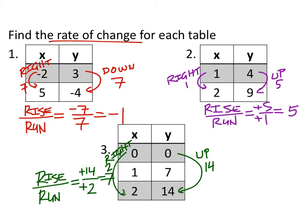We can demonstrate this with the next set of points. For example, if we went from zero to seven, that would be up seven, and from zero to one would be to the right one — positive seven over positive one is still seven. That would work the same going from seven to fourteen and from one to two. It's going to be the same value no matter what, because these are linear tables and the rate of change is constant, so the slope is the same no matter what as long as we simplify.